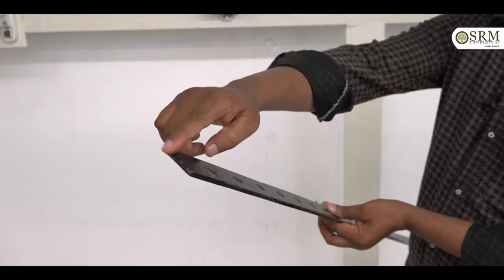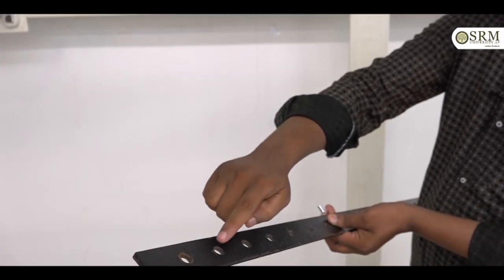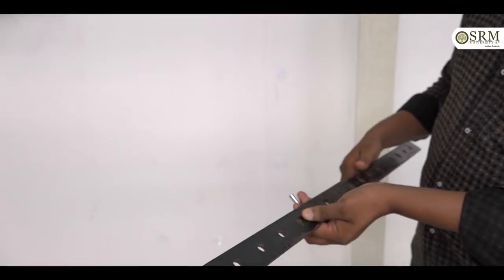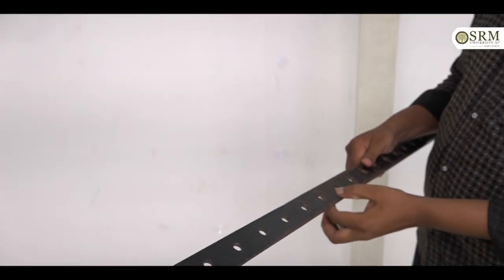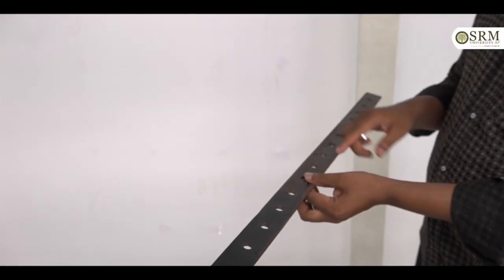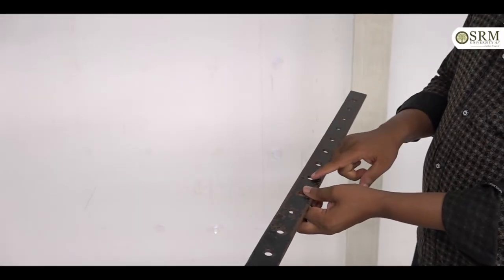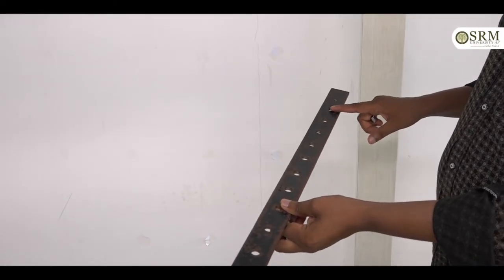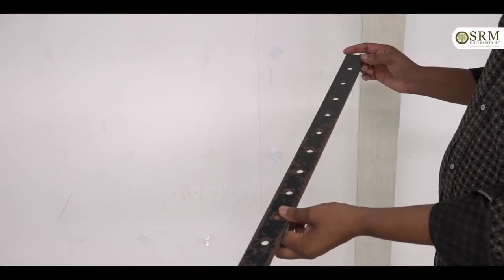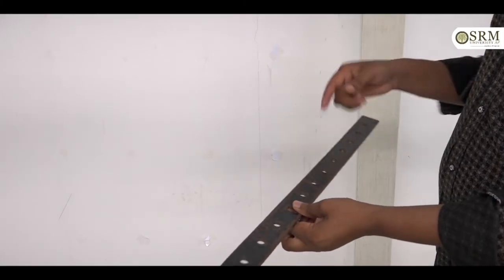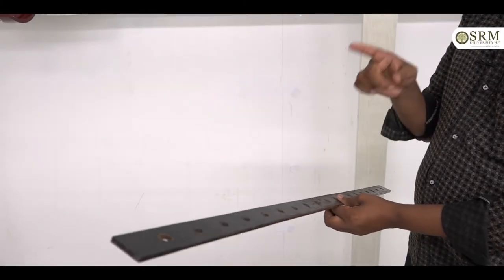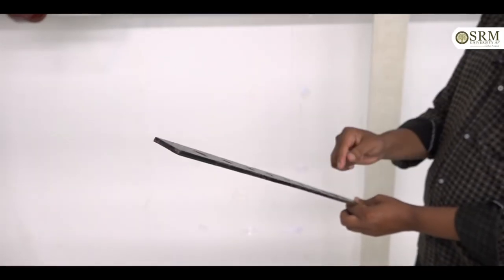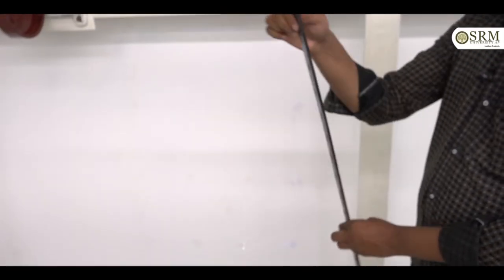Let us consider this a fixed end. From the fixed end, the length is marked at 5, 10, 15, 20, 25, 30, 35, 40, 45, 50 centimeters — this is the center of gravity. Then continuing: 55, 60, 65, 70, 75, 80, 85, 90, 95, and 100 centimeters. The length of this pendulum is 100 centimeters, that means 1 meter.